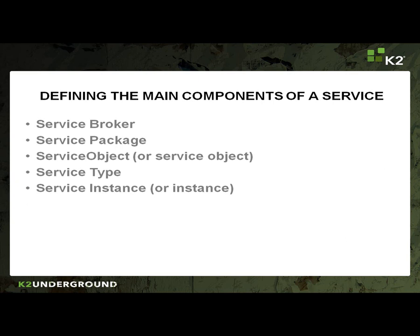So how does all this come together? Smart Object definitions are stored by the Smart Object server. This is also where service objects are instantiated to encapsulate data related to specific back end systems. Service objects then use a service instance to send data to and receive data from back end systems. This data is sent through XML payloads known as service packages. The service broker is responsible for handling the exchange of the different service packages.